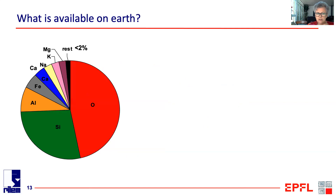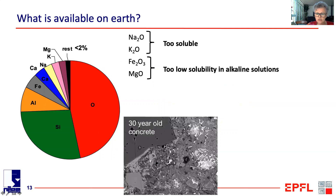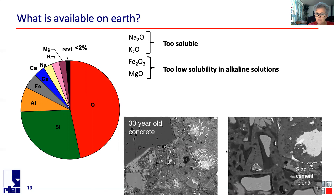When we go back to the composition of the earth and look at the different oxides, the problem with the oxides of sodium and potassium is that these are too soluble — they dissolve, but they don't precipitate hydrates. On the other hand, the oxides of iron and magnesium have too low solubility. For example, in this 30-year-old concrete, the bright regions are where the iron was in the original clinker and in 30 years it just stayed in the same place — it didn't contribute to developing strength. Similarly with magnesium: magnesium is present in slags, and in this slag-cement blend, the slag grains are surrounded by dark rims containing magnesium which also didn't move around.